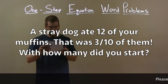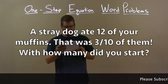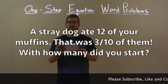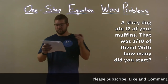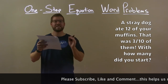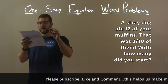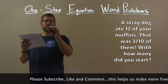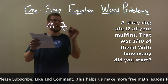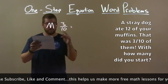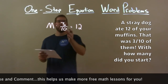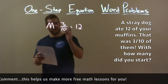A stray dog ate 12 of your muffins. That was 3/10 of them all. With how many did you start? The initial amount of muffins M, multiplied by 3/10, gives the amount the stray dog ate — 12. Now we have our equation: M times 3/10 equals 12.